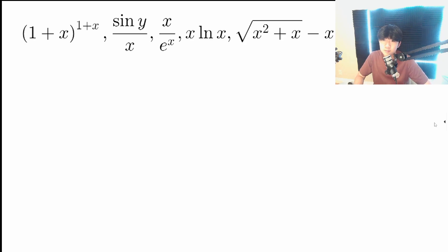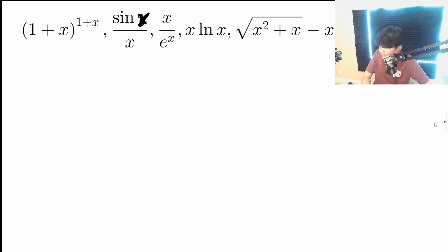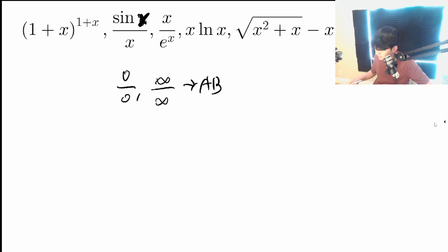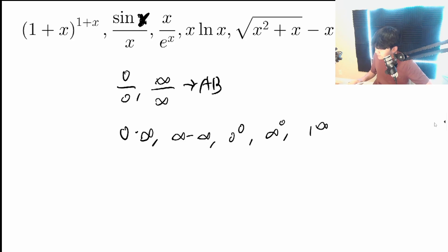The functions shown above, if we took some limit as x goes to 0 or infinity, are going to be in different indeterminate forms. The following indeterminate forms are 0 over 0 and infinity over infinity — these are the ones you learn in Calculus AB. But in BC, we extend this list to: 0 times infinity, infinity minus infinity, 0 to the 0, infinity to the zeroth power, and 1 to the infinity. There are a total of seven cases here that are very important for you to know.